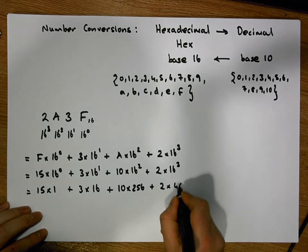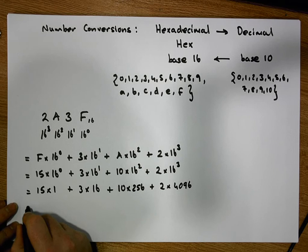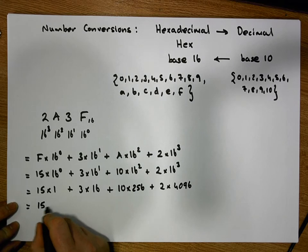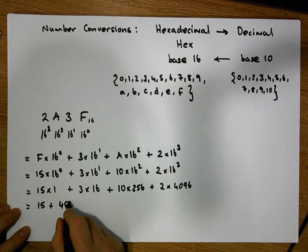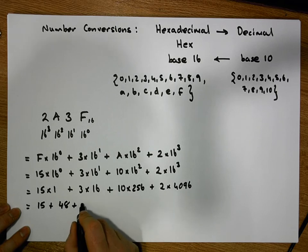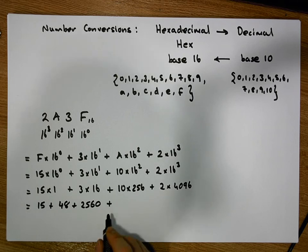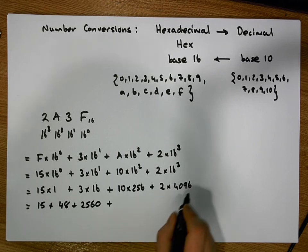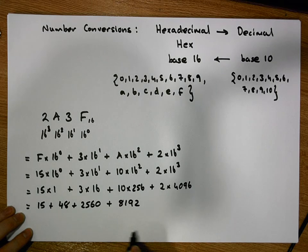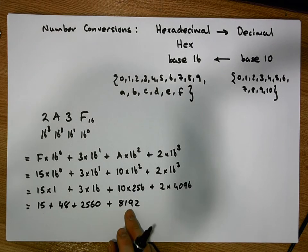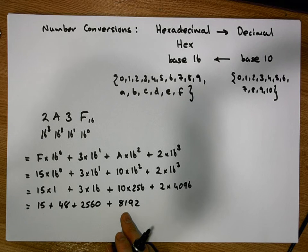Which gives us 15 plus, well, 3 times 16 is 48, plus 10 times 256 is 2560, plus 2 times 4096 is equal to 8192.